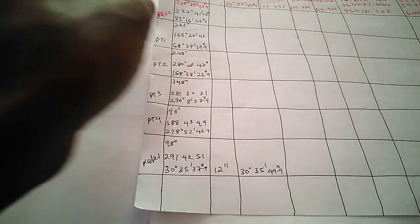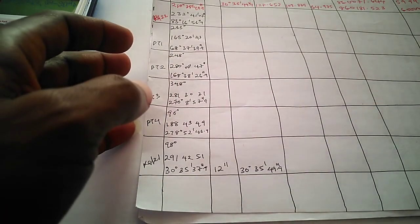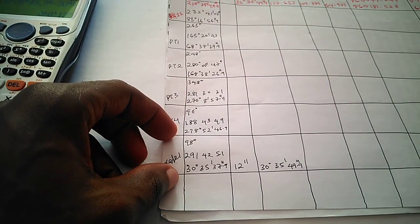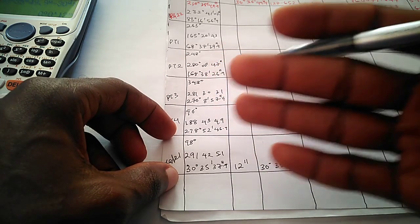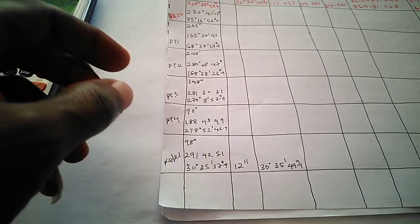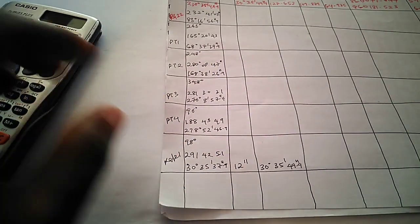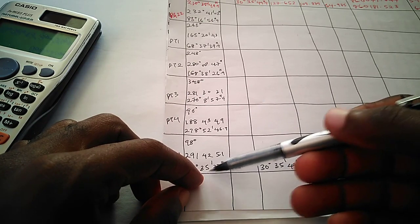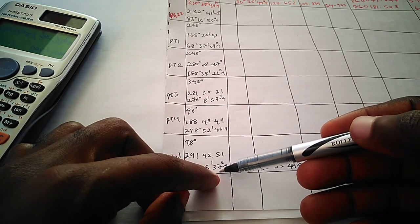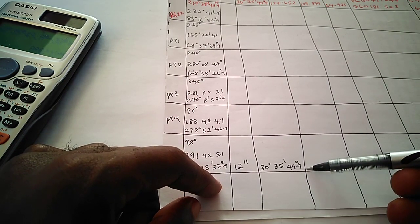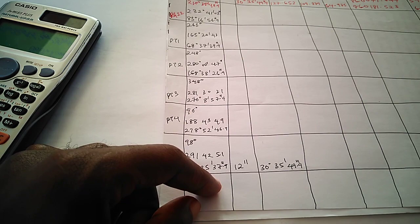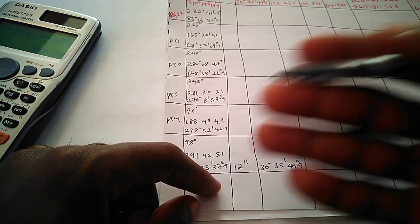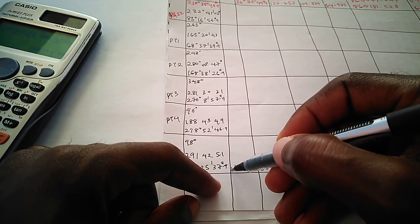Now, will that 12 seconds be positive or negative? The way I explain it: subtract the small one from the big one — that way you always get a positive answer. Two minus one is always one. So subtract the small from the big and get positive 12 seconds. We have 37.9 but we need 49.9, so we need to add 12 to it. Therefore the error is plus 12 seconds.